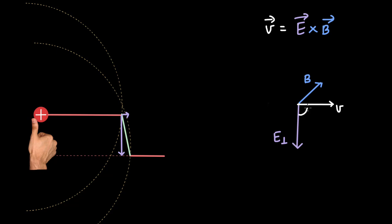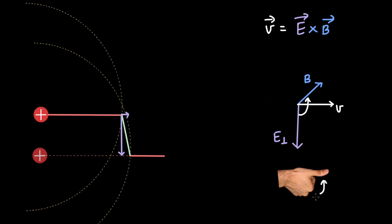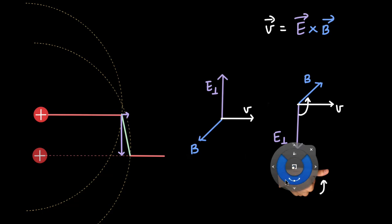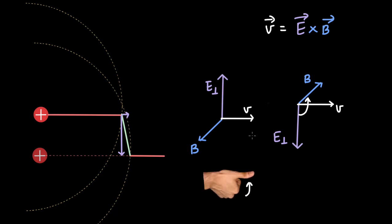We can figure out the direction of magnetic field, electric field, or wave velocity if we know two of these three vectors. The direction of wave travel is always in the direction of E cross B. Using the right-hand curl rule: the thumb points in the direction of wave travel, and the fingers curl from E to B. So far off from the source, the induced electric field induces a perpendicular component of magnetic field. Let's see how this looks in three dimensions.